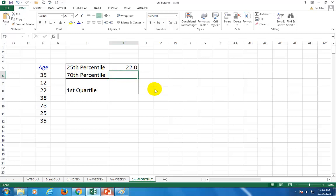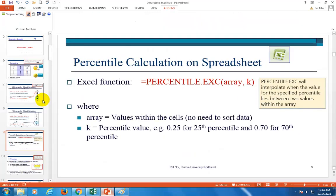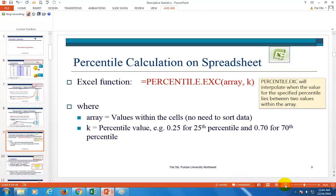Now for the 70th percentile, which is the second one we calculated, equals PERCENTILE again, double-click. You can type it all out or quickly double-click it. Highlight all of these, comma, then 0.70. That's it. That's the value that you want. Now then, going back to the presentation.